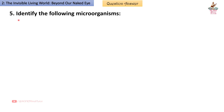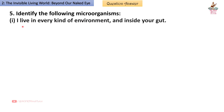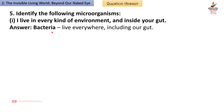Question 5: Identify the following microorganisms. First — I live in every kind of environment and inside your gut. Answer: Bacteria live everywhere, including our gut.